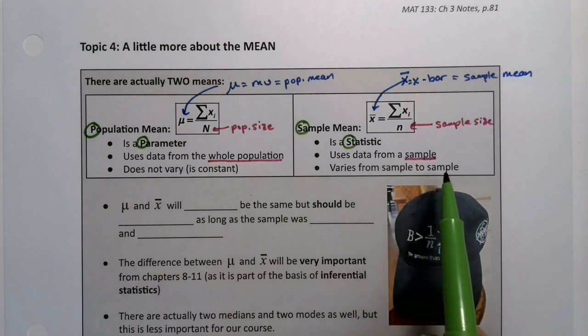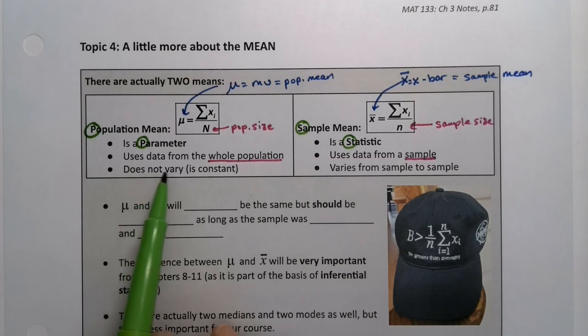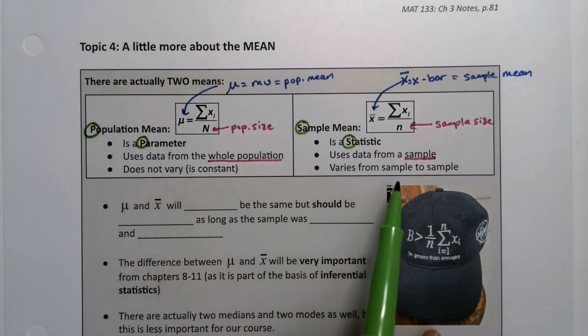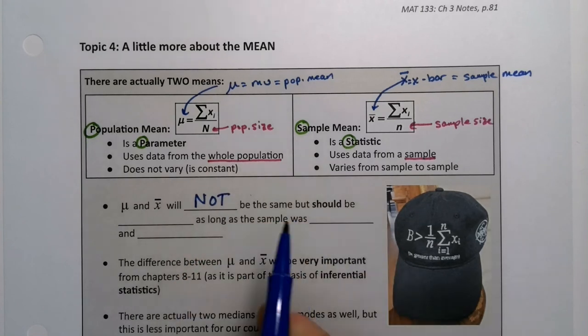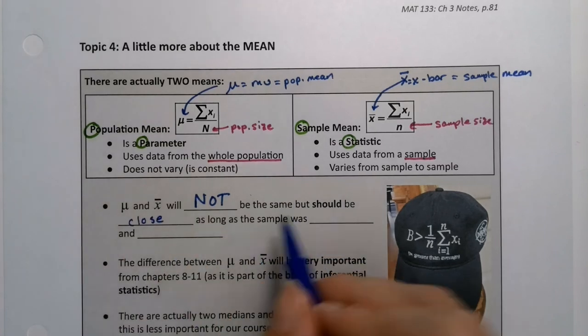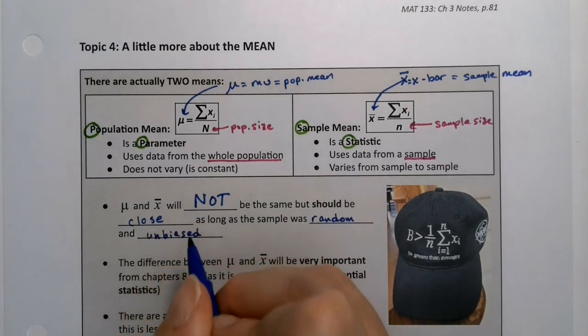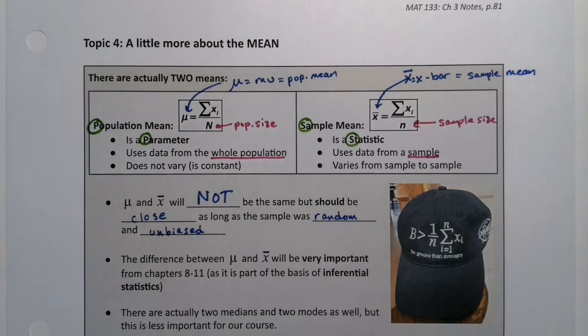This varies from sample to sample to sample. Every sample is different. No two samples are alike. So it's going to change from sample to sample. This one is what it is in real world, in nature. There is some population mean. These sample means and this population mean are not the same, but they should be close. As long as the sample was random and unbiased. Random, meaning you want to choose randomly, not just choose your friends or relatives and unbiased.